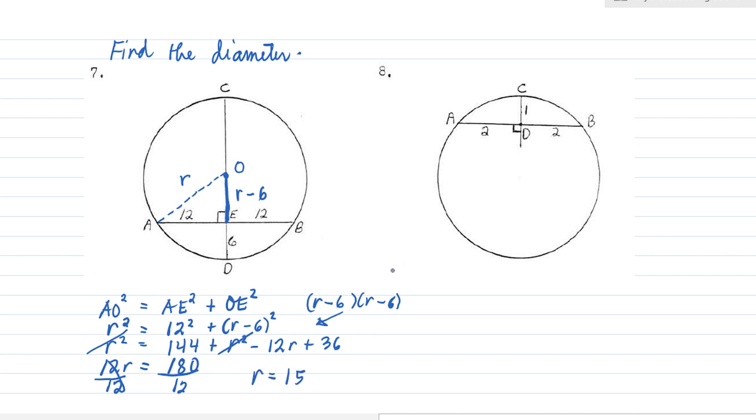So the radius is 15. Therefore, the diameter is 30. So for number 7, the radius is 15. But we're looking for the diameter. Let's use D for diameter. That is 30 units. Let's have the other one.